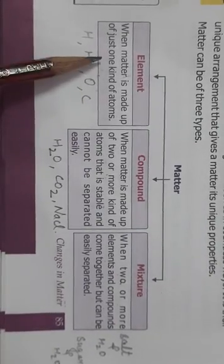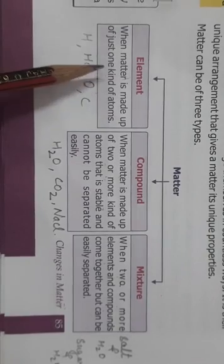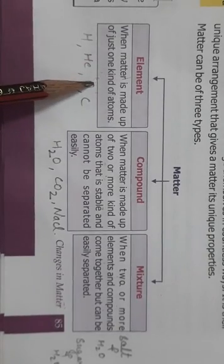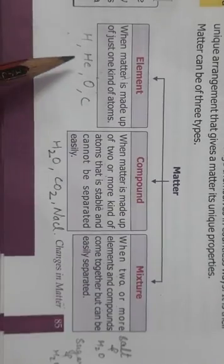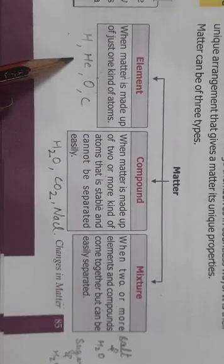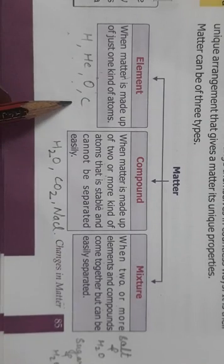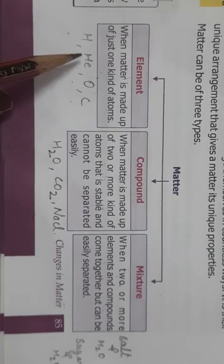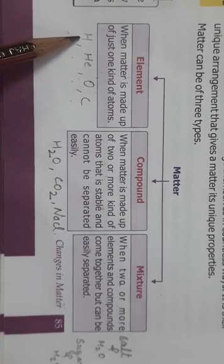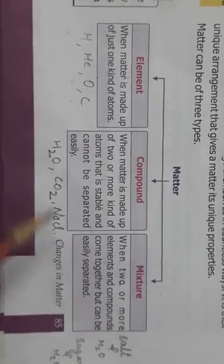What is an element? Element means when matter is made up of just one kind of atom. For example, hydrogen, helium — He means helium, O means oxygen, C means carbon. So you can see it is made up of just one kind of atoms, like hydrogen atom, helium atom. So this is element.